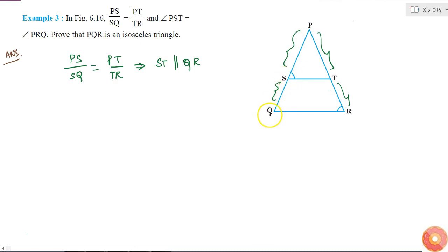These two lines are parallel, so these two angles will be equal because corresponding angles cut by a transversal on two parallel lines will be the same. So angle PSD is equal to angle PQR.